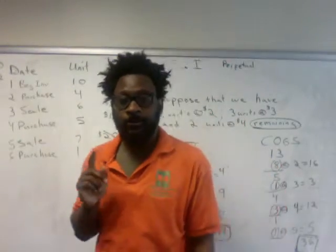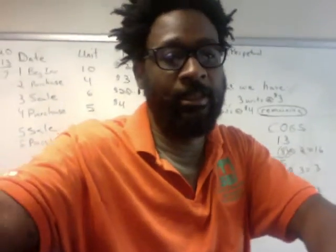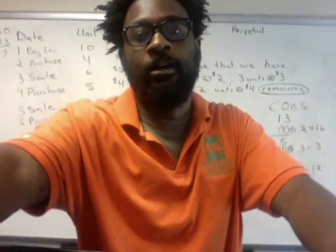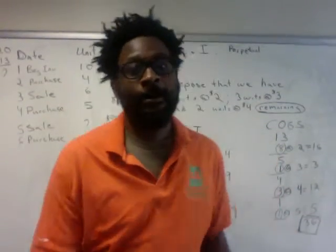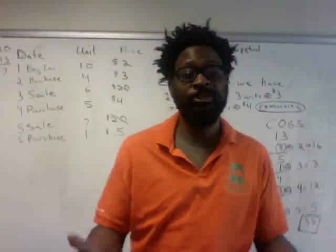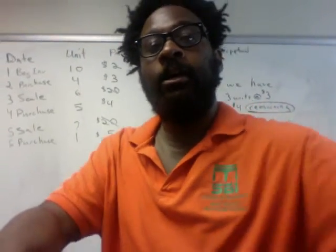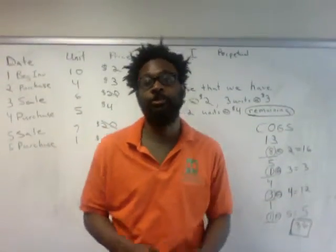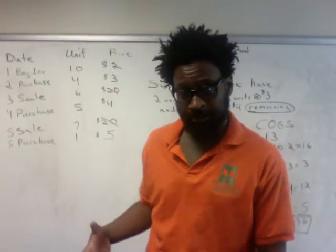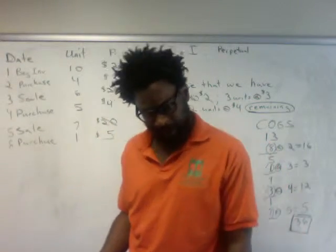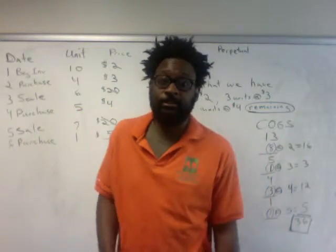The last thing I'm going to show you is how to do a self-check to make sure you have the information correct. You can also look at it as a shortcut to find a missing component — for example, if you've already calculated the cost of goods sold, you could use this alternative self-check to come to the correct answer for ending inventory.